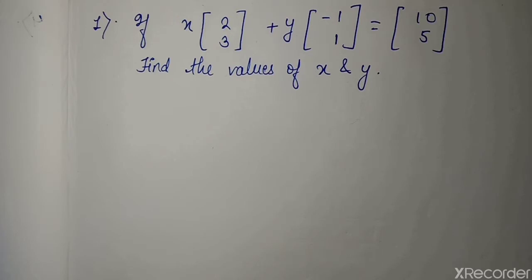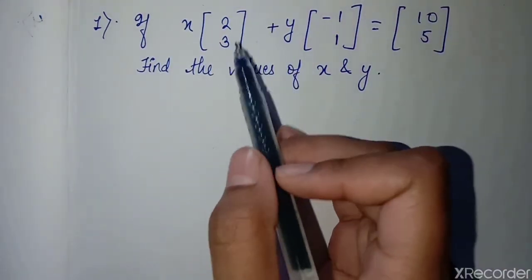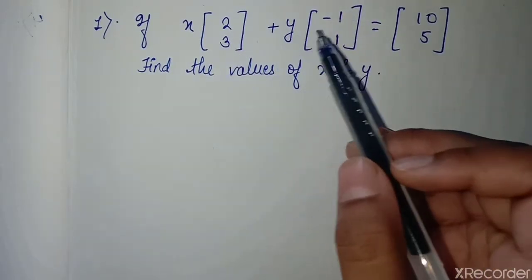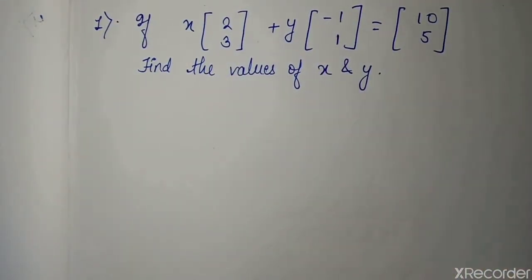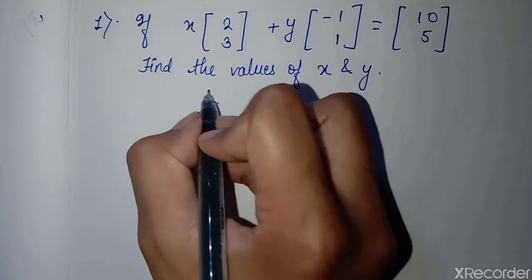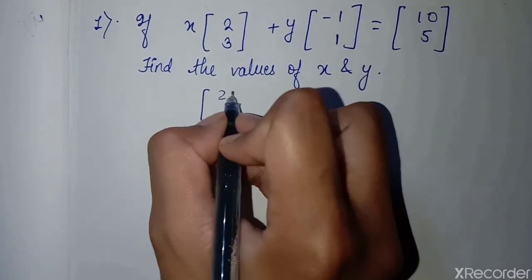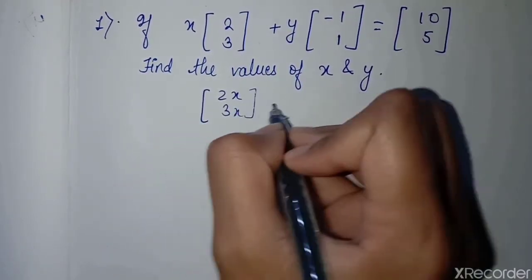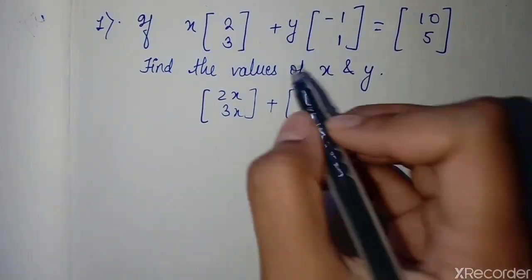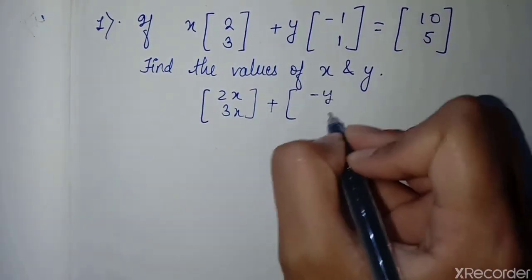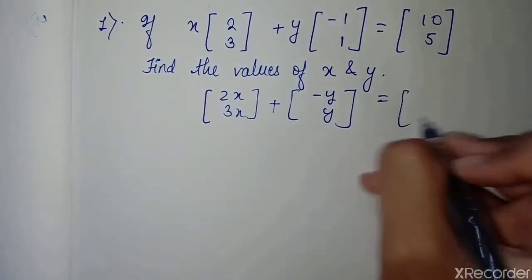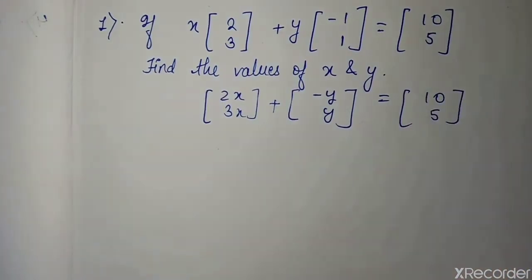So today we are going to talk about them. Let's start the video. We have the first question: if x into the matrix [2, 3] plus y into another given matrix equals a result, we have to find the values of x and y. It's very simple. You multiply it out: 2x and 3x, then y is multiplied giving minus y and y, and it is equal to 10 and 5.